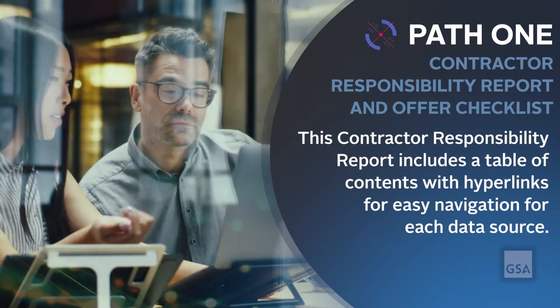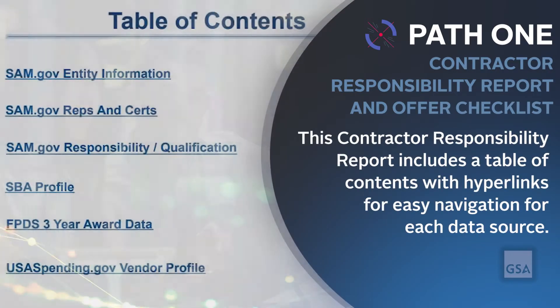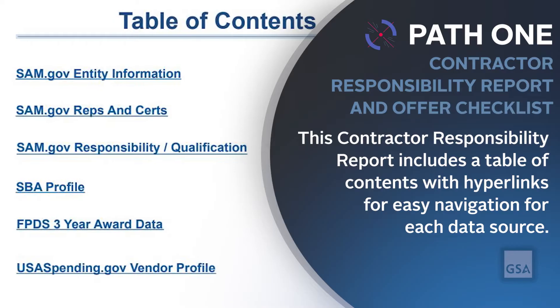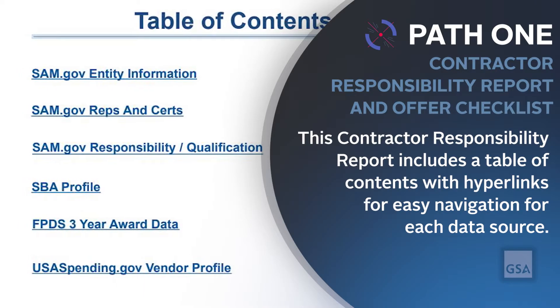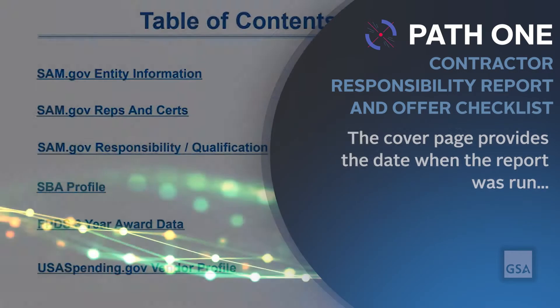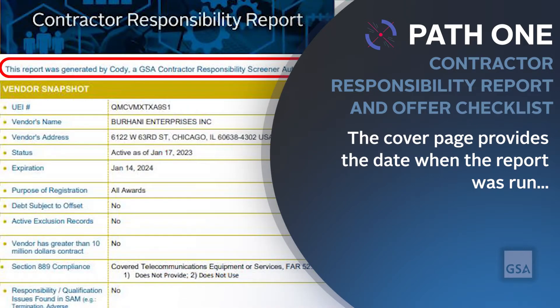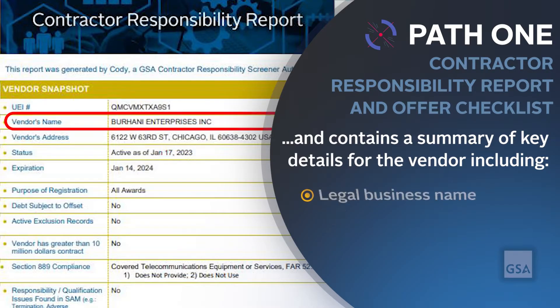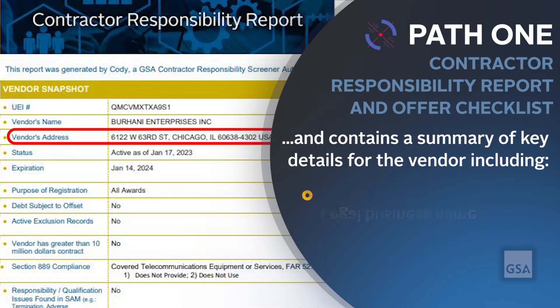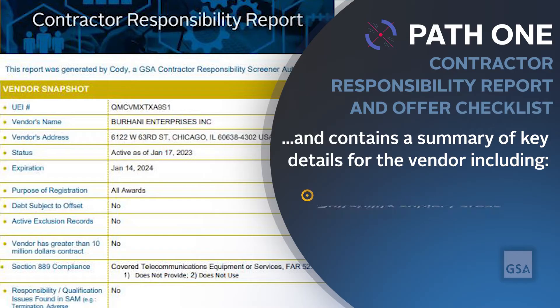The contractor responsibility report includes a table of contents with hyperlinks for easy navigation for each data source. The cover page provides the date when the report was run and contains a summary of key details for the vendor, including their UEI, legal business name, registered address, and suitability subject areas.